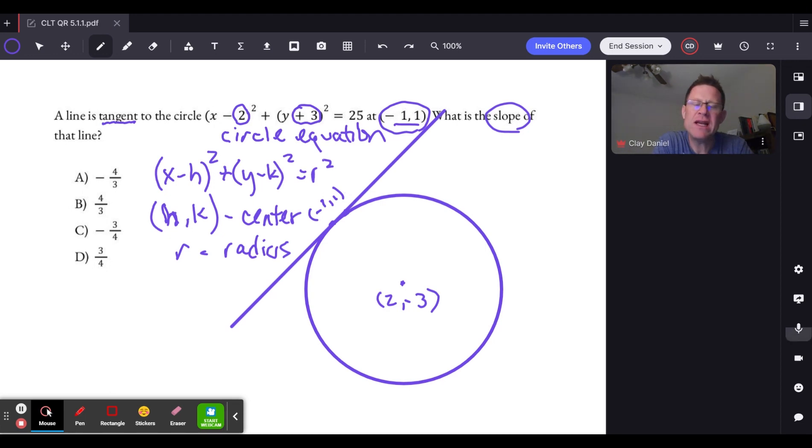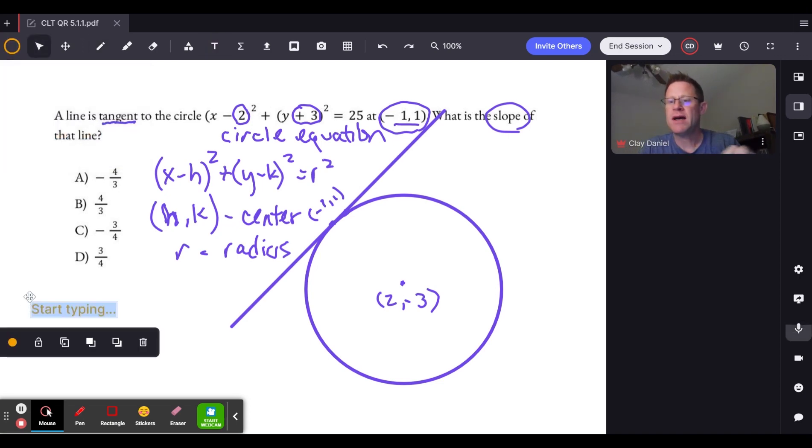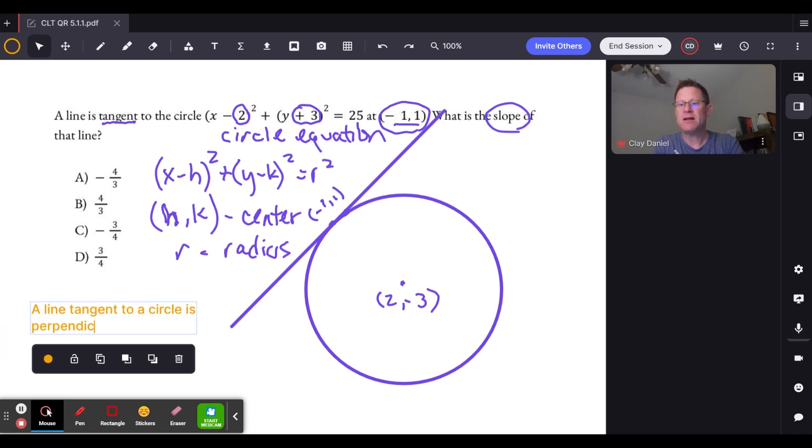All right, now we're getting close. We want to think about the radius, and here's why. If we think about the point, the line, the tangent line and what its slope might be, we need to keep one thing in mind: a geometry property that says a line tangent to a circle is perpendicular to the radius it intersects.